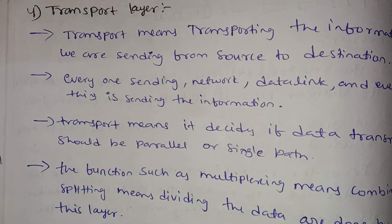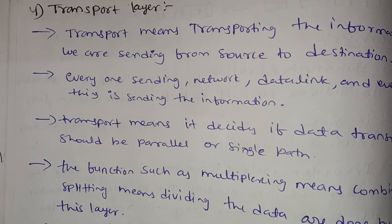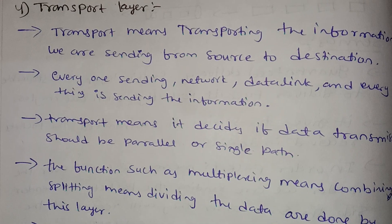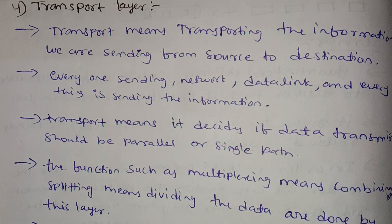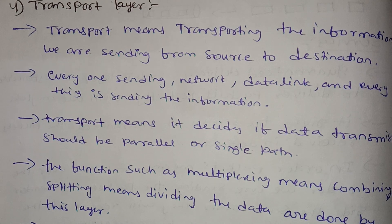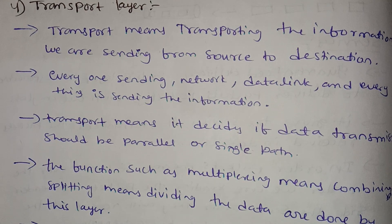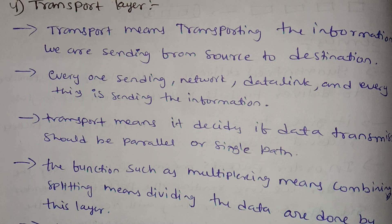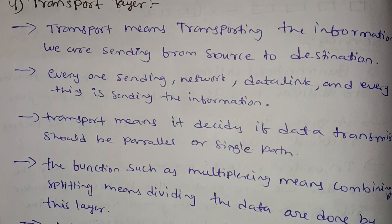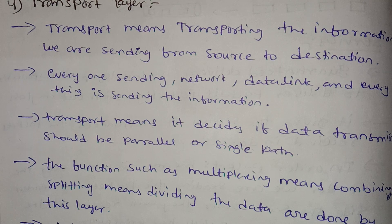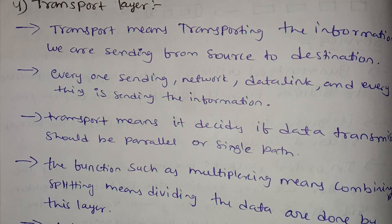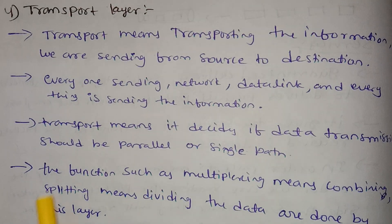Hi guys, I will explain the 4th layer. This is Part 4, the 4th layer of the OSI reference model. I will explain the transport layer, which comes after the Data Link Layer and Network Layer.